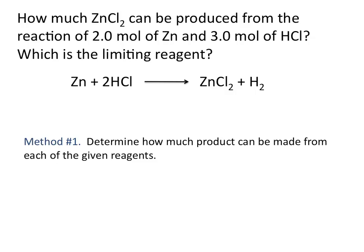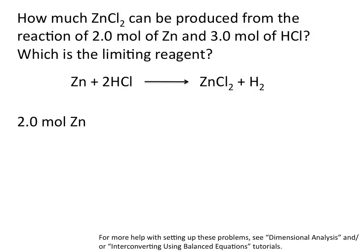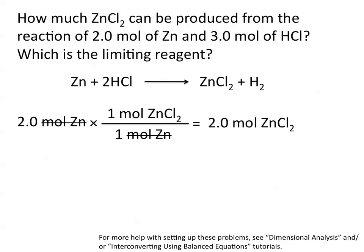We can do this one of two ways. The first way is to determine how much product can be made from each of the given reagents. Starting with our two moles of zinc, we use the coefficients in our correctly balanced chemical equation to convert moles of zinc to moles of zinc chloride. This tells us that one mole of zinc is required for every one mole of zinc chloride produced. Remember, you can only convert from moles of one reactant or product to moles of another using the balanced equation. This tells us that two moles of zinc with excess hydrochloric acid can make two moles of zinc chloride.